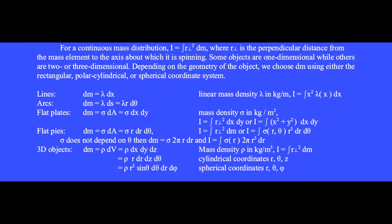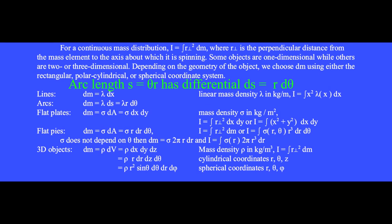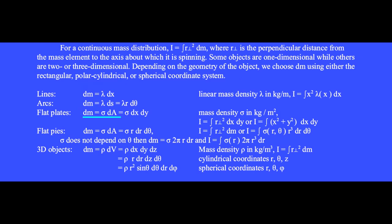In one dimension, the standard symbol for linear mass density is lambda, given in kilograms per meter. In two dimensions, we use surface density sigma in kilograms per square meter. In three dimensions, the mass density is rho in kilograms per cubic meter. In one dimension, the differential mass is dm equals lambda dx. For an arc of constant radius and arc length s equal to theta r, we have ds equals r d theta, so the differential mass dm equals lambda r d theta. In two dimensions, dm equals sigma dA. In rectangular coordinates, the differential area dA equals dx times dy. In cylindrical coordinates, the differential area is r dr d theta. If sigma does not depend on theta, then the differential mass equals sigma times 2 pi r dr.